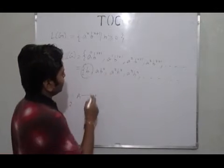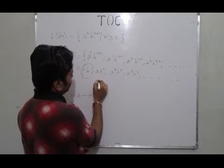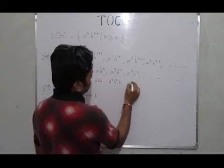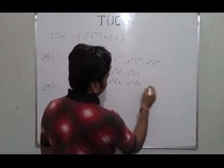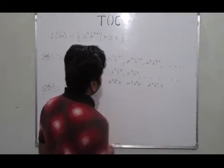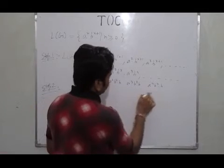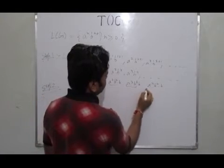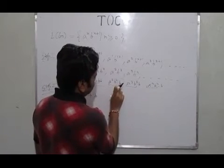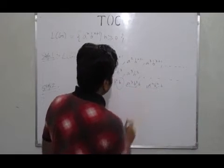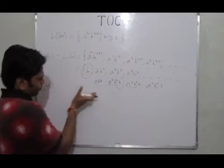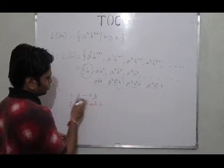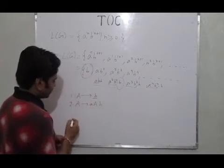We first generate 'ab'. Now looking carefully, the next string is 'ab-squared' meaning 'abb', then 'a-squared b-squared b', then 'a-cubed b-cubed b', and so on. This means that in each successive string, a and b are equal, followed by one extra b. This one extra b can be generated through the first production, and we make a recursive call using 'A → aAb' to generate all strings.